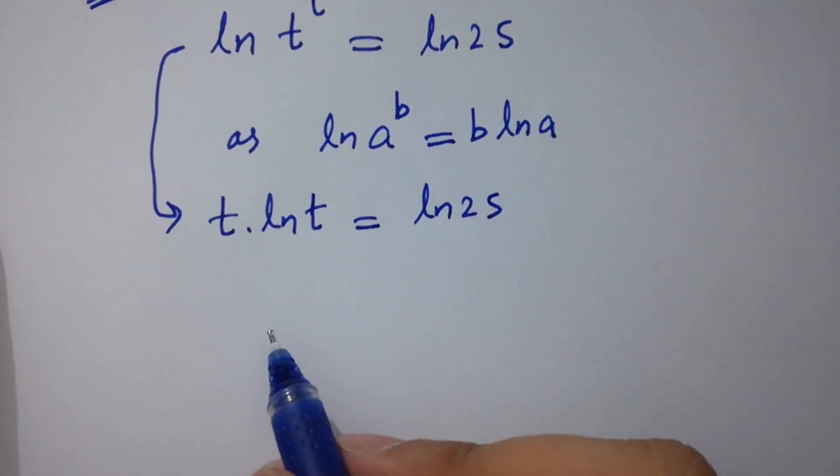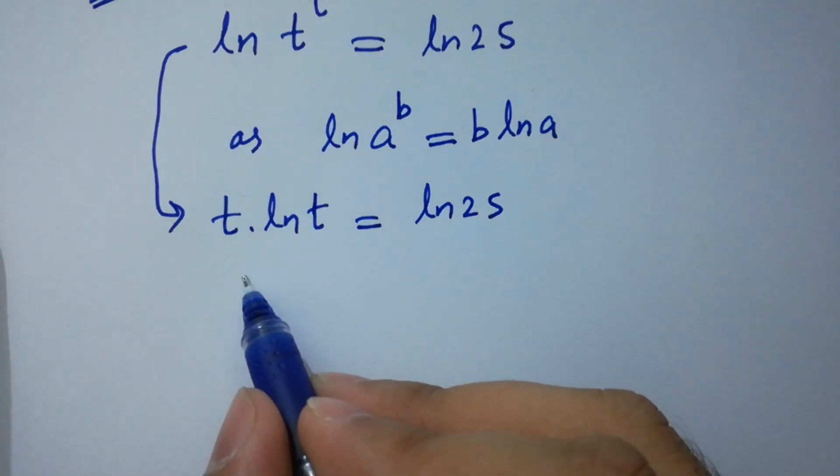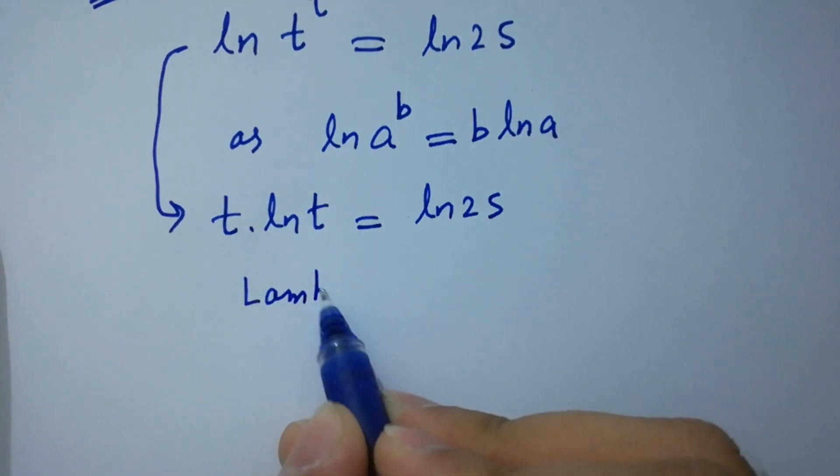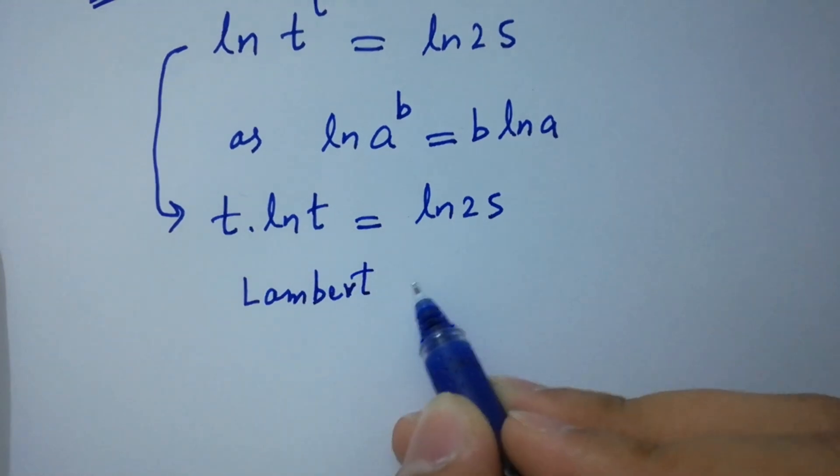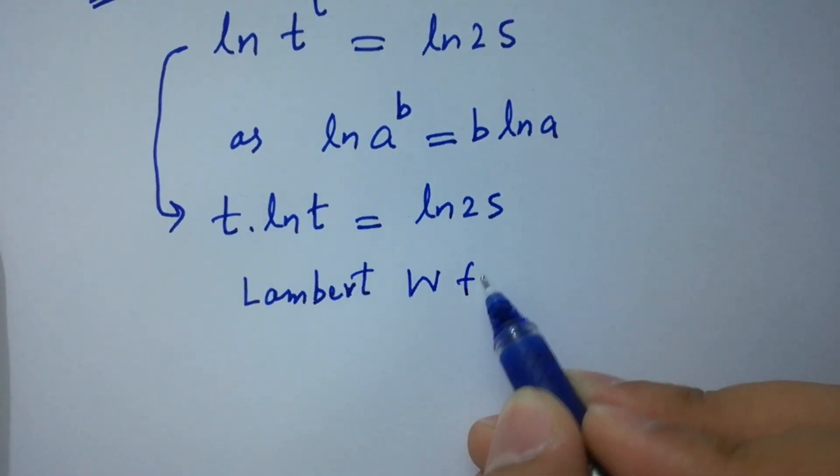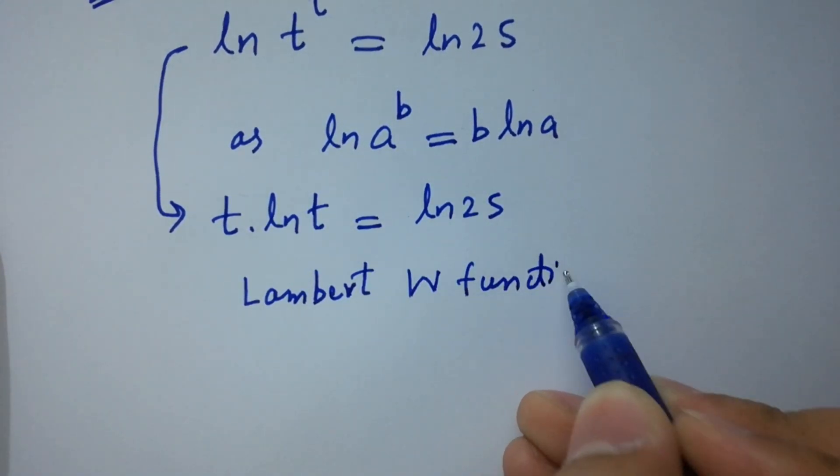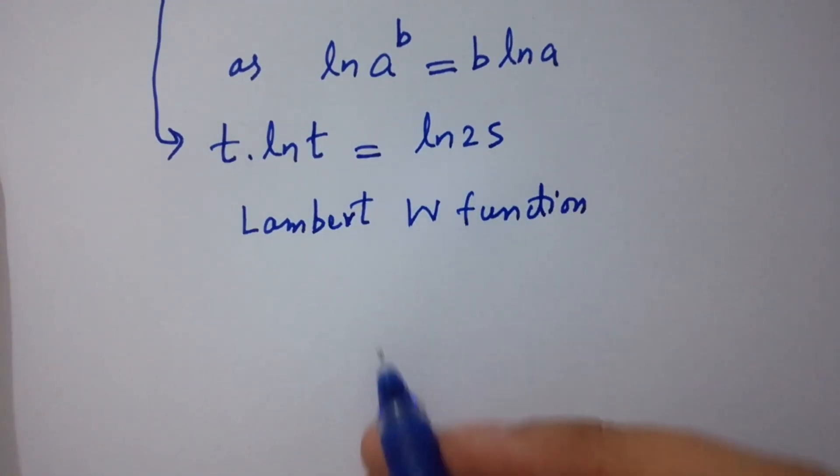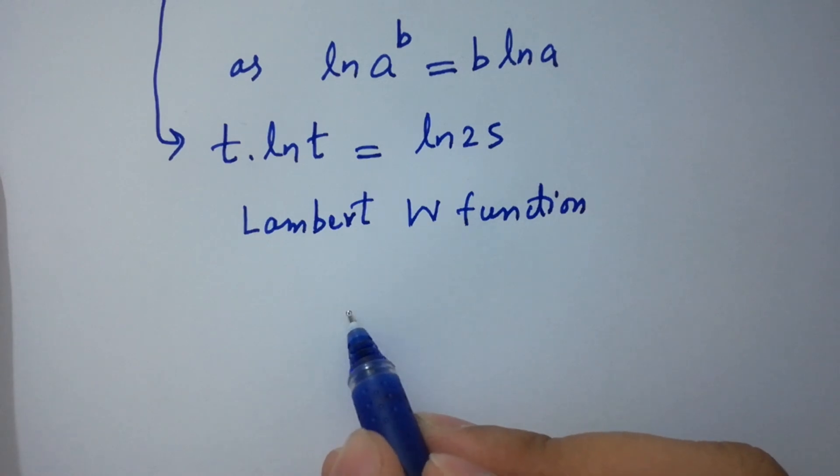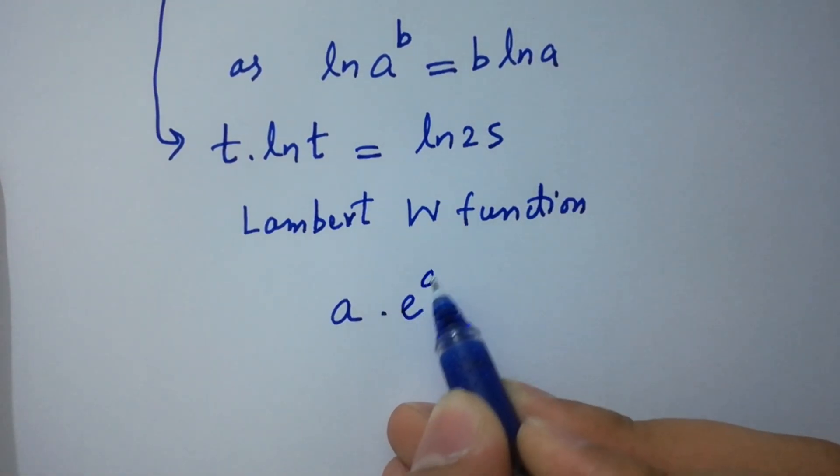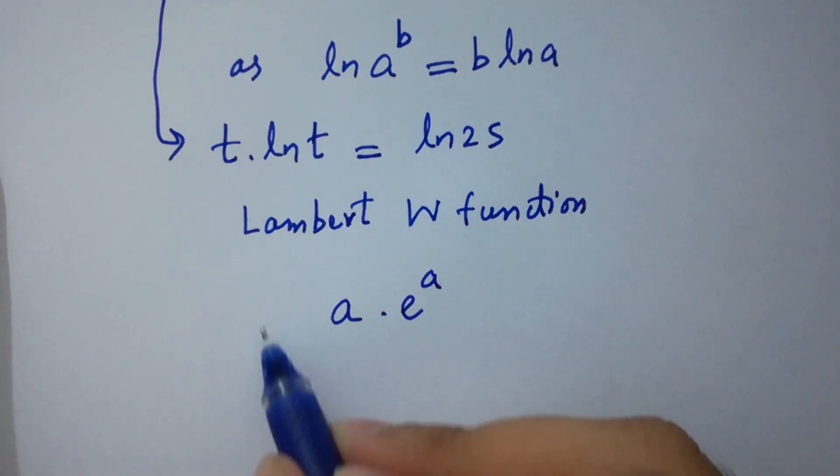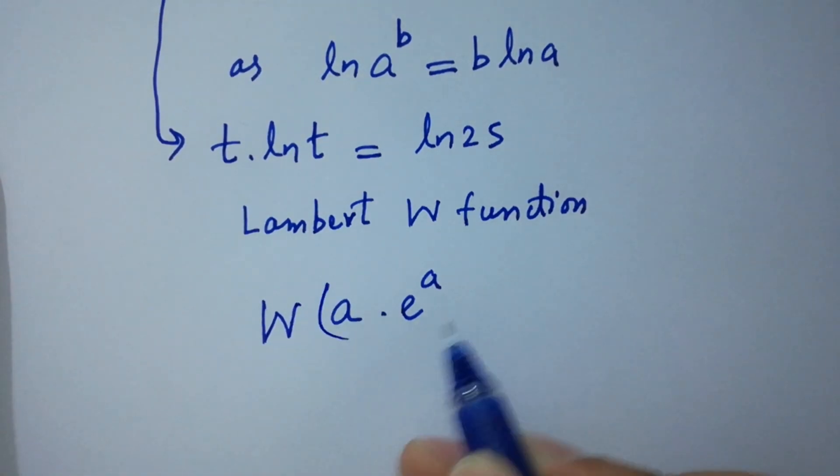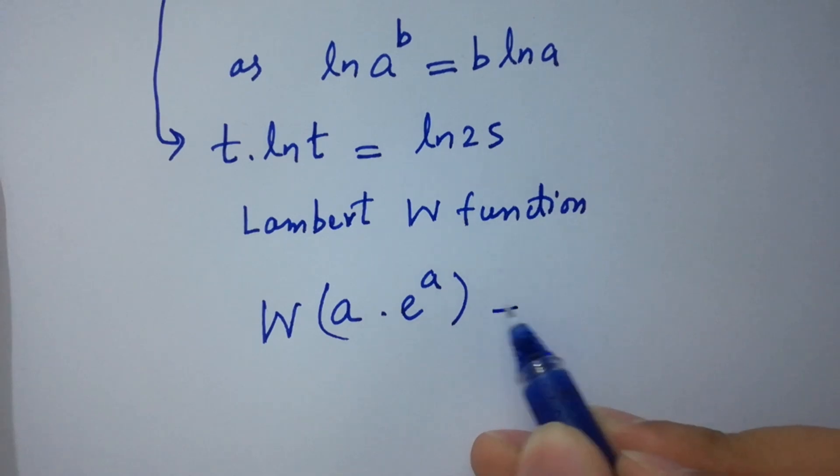I am going to apply here the Lambert W function, which is very easy to understand. If you have an expression a times e to the power a, if you apply here Lambert W function, then it will be equal to a.